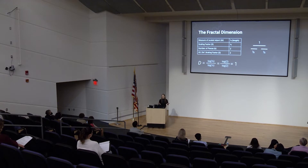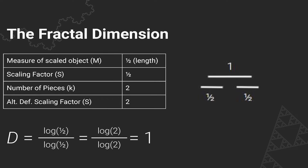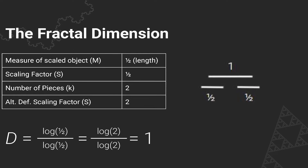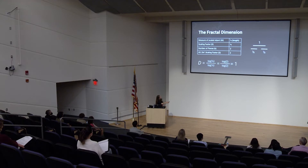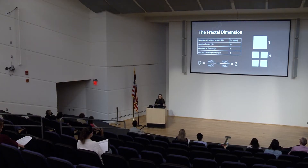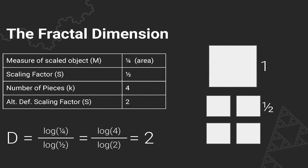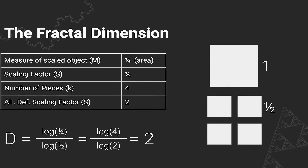Let's look at why a line is not a fractal. If you take a line and split it into two equal pieces, each piece needs to be scaled by two. So D equals log 2 over log 2 equals 1. That's the same as the topological dimension of a line, so this is not a fractal. For a square, you can divide it into four equal pieces, each needing to be magnified by two. Log 4 over log 2 equals 2. The topological dimension equals the fractal dimension, so this is not a fractal.